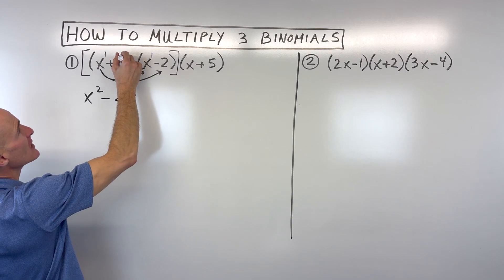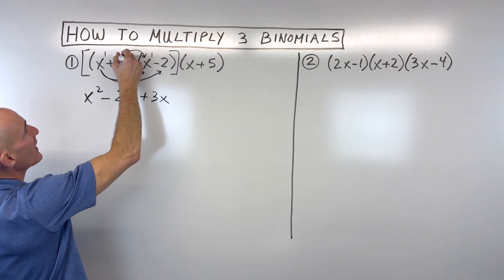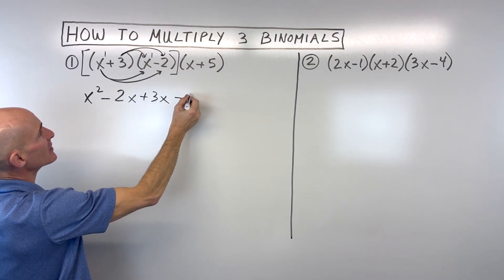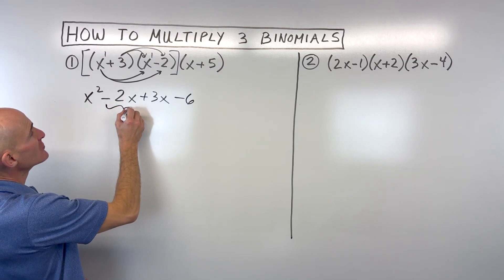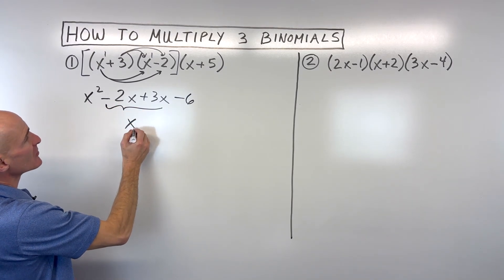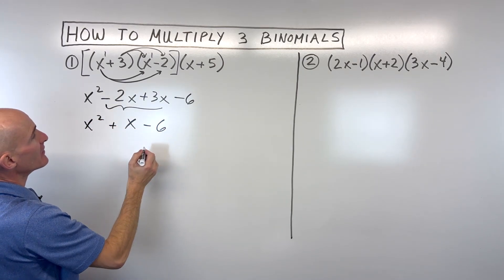Then we're going to take this three, and we're going to distribute it. So three times x is positive three x, and three times negative two is negative six. Now, let's go ahead and combine like terms. The negative two x and the positive three x comes out to just one x. Let's bring down the x squared and the negative six.